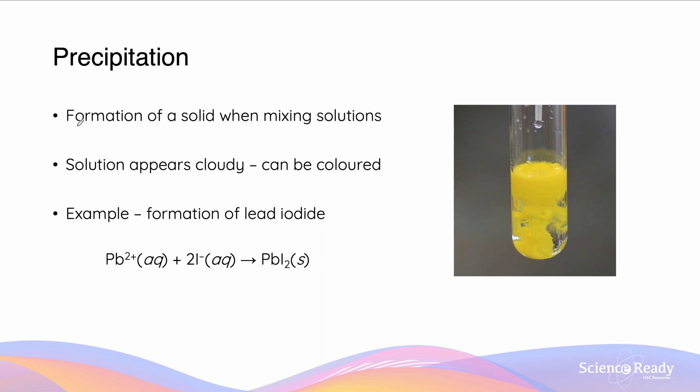A precipitation occurs where there is a formation of a solid. This can be done often by mixing two solutions together. The solution may appear cloudy, although it may also be potentially coloured. In the case on the right hand side, we have the formation of lead iodide, which produces this cloudy yellow colour. This can be formed when we mix a solution containing lead ions with another solution that contains iodide ions, and they will react with one another to form the ionic salt lead iodide.